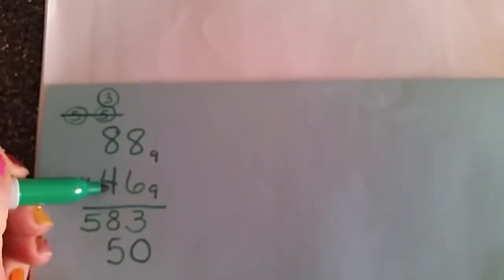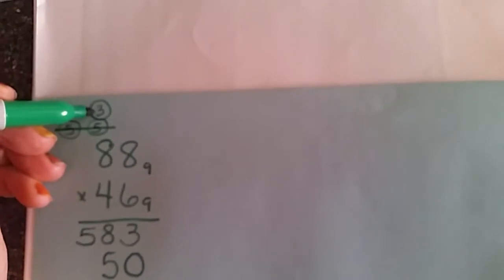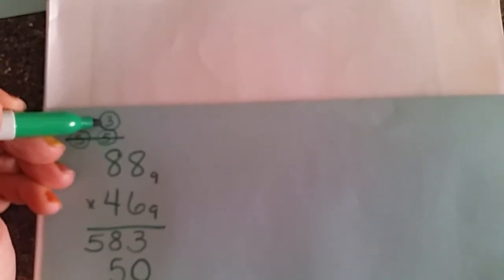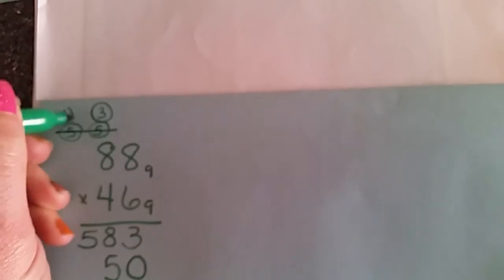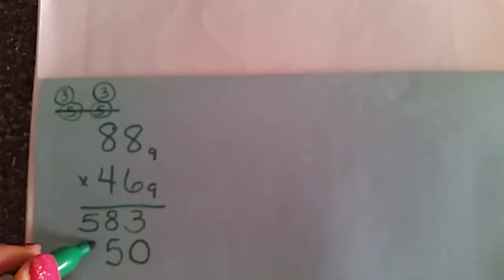Here we've got 4 times 8, which is 32, plus 3 more, which would be 35, which would still be 3 groups of 9. Now we have 8 leftovers.